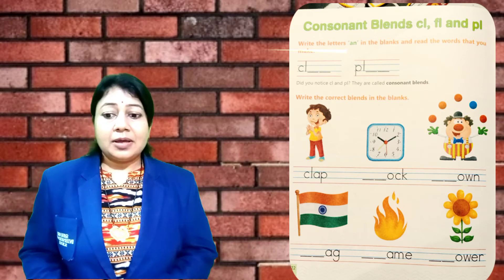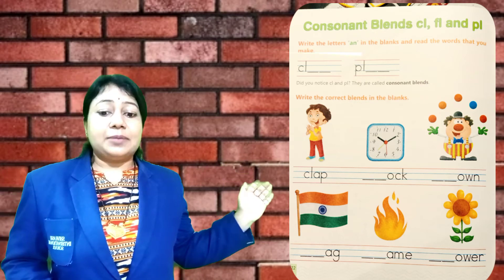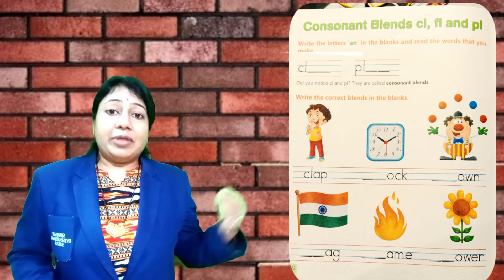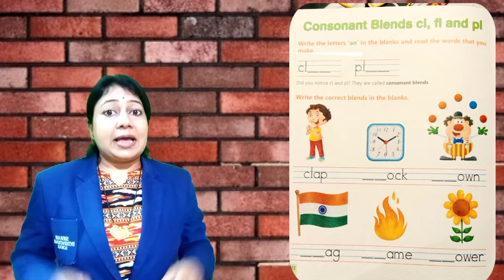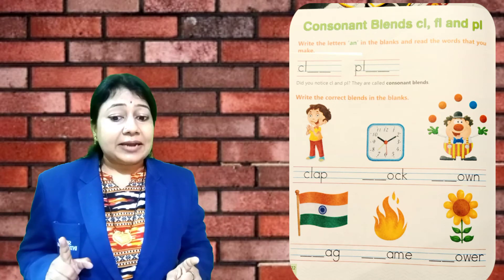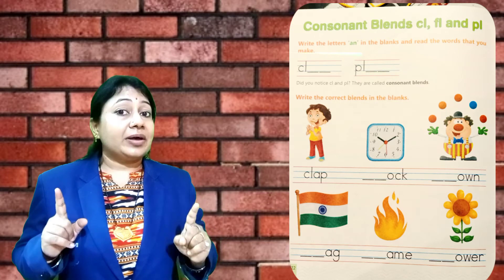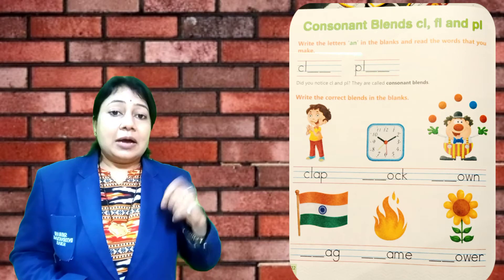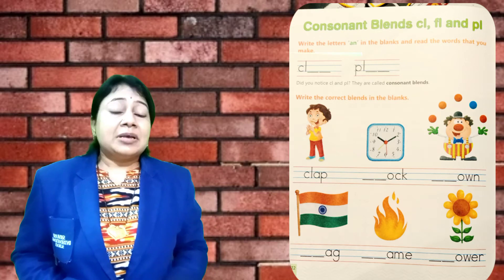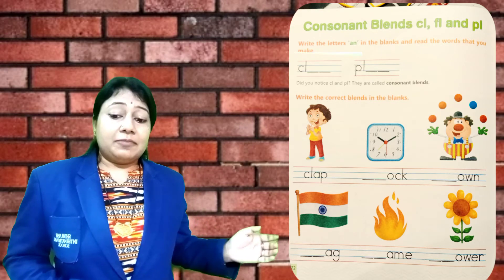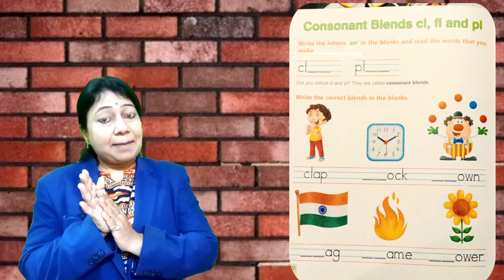Let's see what is written over here: Write the correct blends in the blanks. There are some pictures. Recognize the picture and write the correct blend in the blank. First there is a clap — one child is clapping. So we write C, L, A, P — clap.